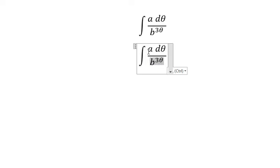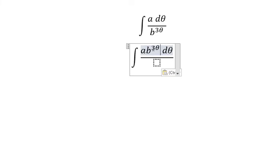In this situation we need to move this to the numerator, so we can change it into b to the power of negative 3 theta. This is the technique to convert this fraction power into the negative power.